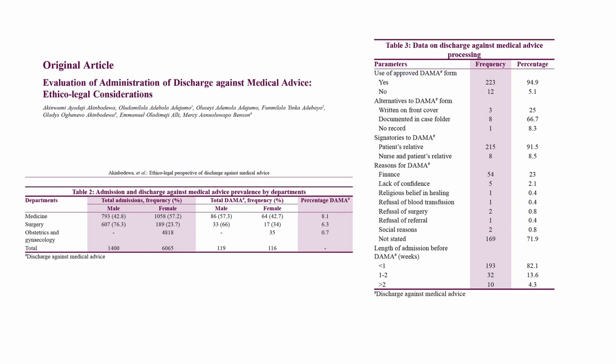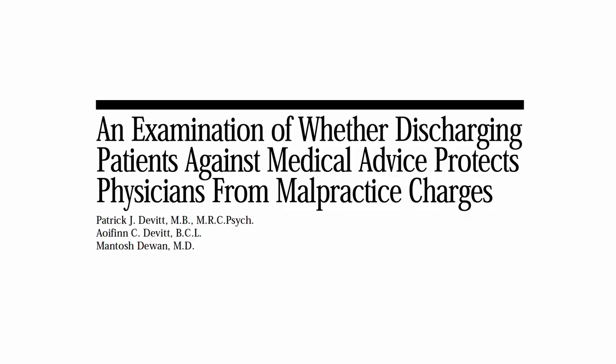Unlike in the States where AMA skews toward low socioeconomic status, in Nigeria a lot of the time the patient is of a higher socioeconomic status and would describe themselves as an entrepreneur. So it's very hard to extrapolate any conclusion from looking at risk factors, unless you're looking at risk factors within your own institution as part of a continuous QI program — which I think is something we should consider for AMAs.